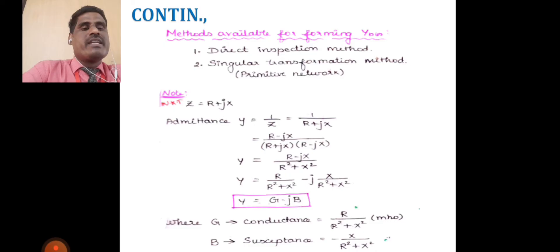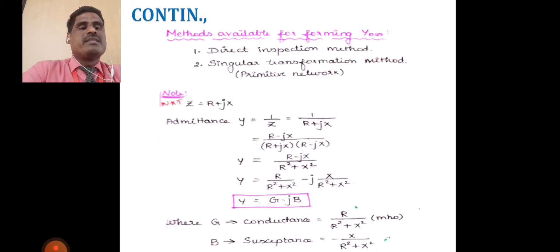So Y = g − jb, where conductance g = r/(r² + x²) and susceptance b = x/(r² + x²).